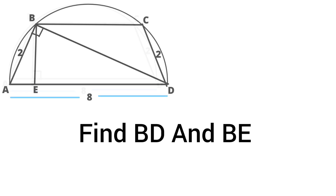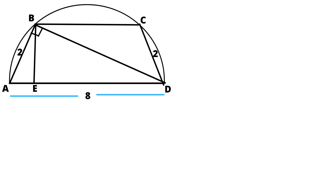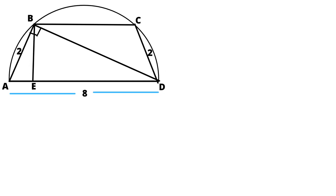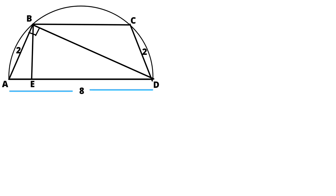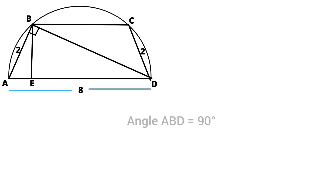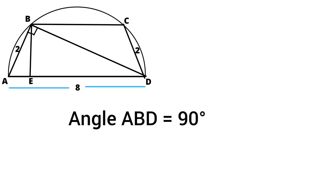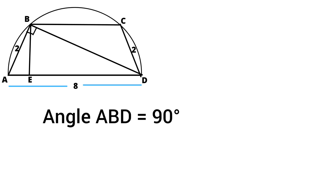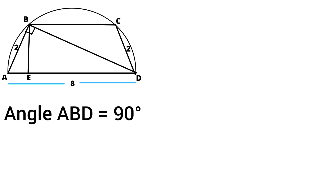We know that angles in a semicircle are always right angles. Therefore, ABD is a right angled triangle. Here, we have the length of AB which is 2 cm, and the length of AD is 8 cm.